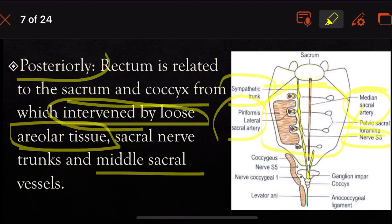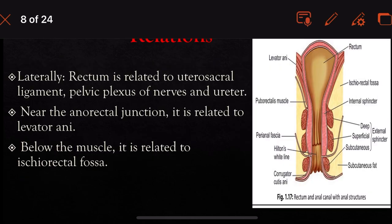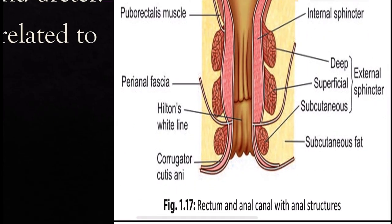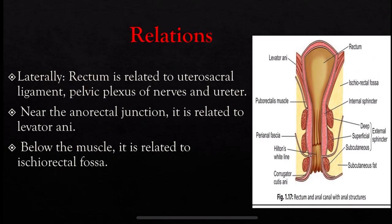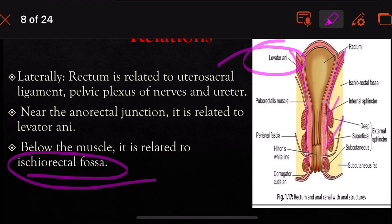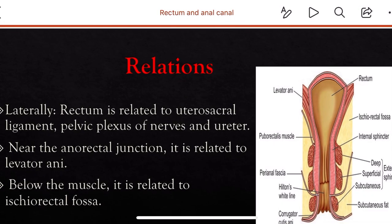The lateral relations of the rectum: it is related to the uterosacral ligament, the pelvic plexus of nerves, and the ureter. Near the anorectal junction, it is related laterally to the levator ani muscle. Below the levator ani muscle, it is related to the ischiorectal fossa on both sides.